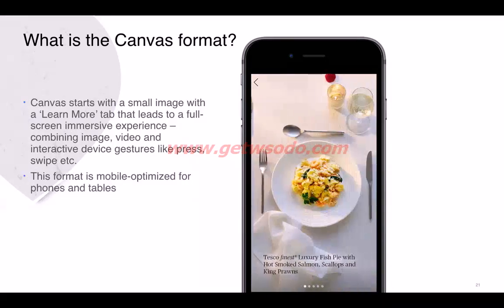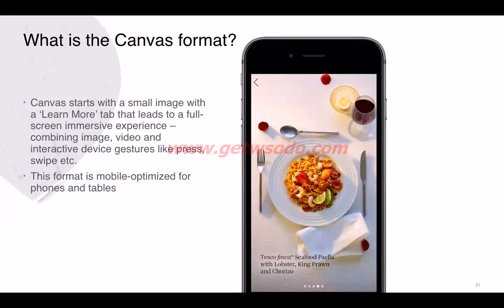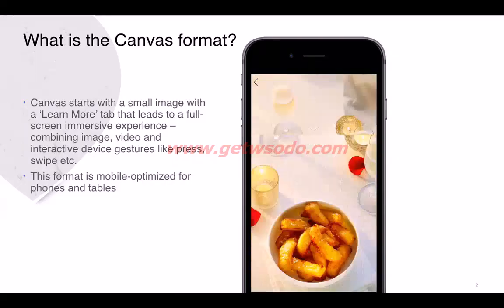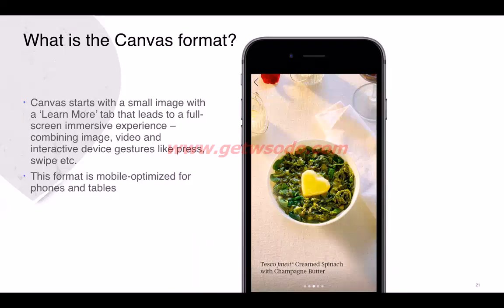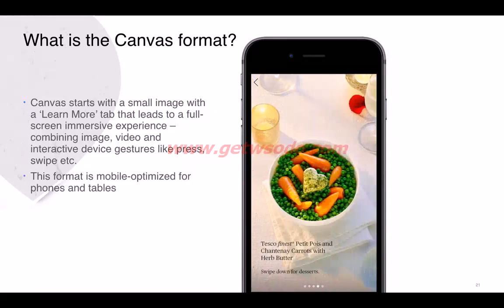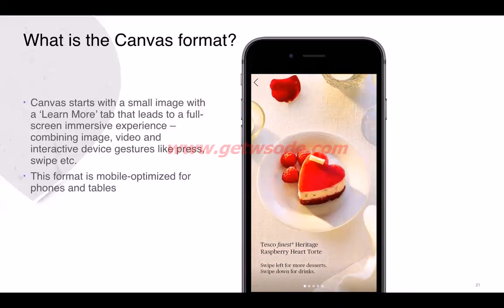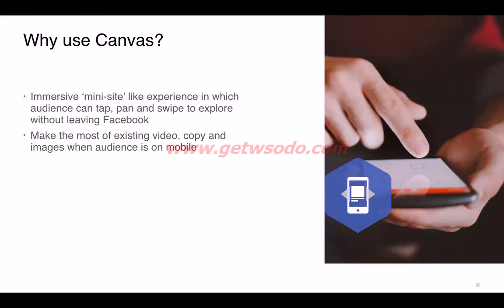The canvas format starts with a small image with a 'learn more' tab that leads to a full-screen immersive experience. It combines image, video, and interactive gestures like press and swipe, and is mobile-optimized for phones and tablets. It's essentially an immersive mini-site experience where the audience can tap, pan, swipe, and explore different aspects of the canvas without leaving Facebook. Make the most of video, copy, and images when the audience is on mobile by using this canvas format.